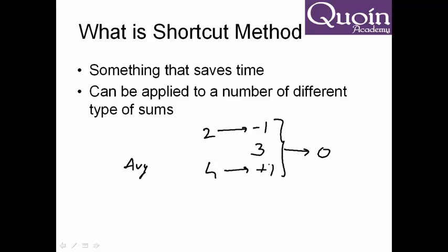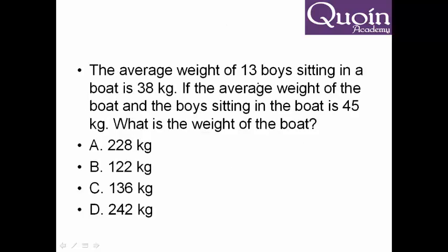Let's try to understand how to use this in a sum. Here there are 13 boys sitting in a boat and average weight is 38 kg. The average weight of the boys and the boat is 45 kg. Let's look at the overall average, which is 45 kg, from which the boys are 38 kg. That means they are minus 7.